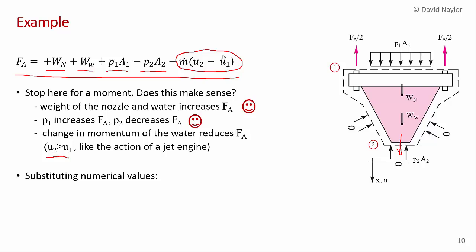The water is accelerating, just like in a jet engine. Air gets drawn in and then gets pushed out. And that provides some thrust. And so because water is being accelerated in the positive x direction, that would require a force. And that force reasonably is going to reduce the tension in the bolts. So the sign of that term makes sense.